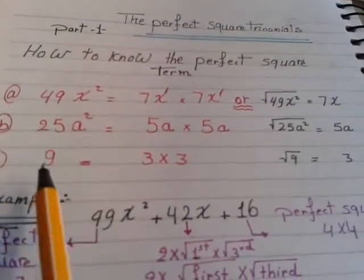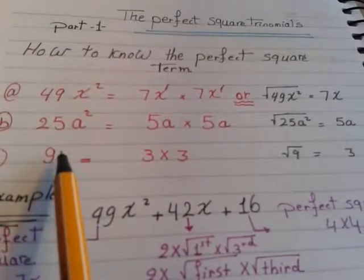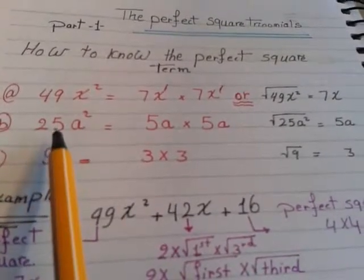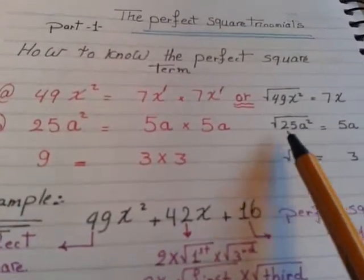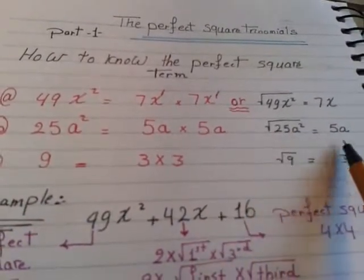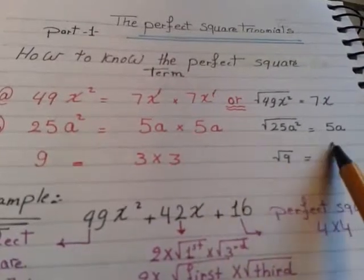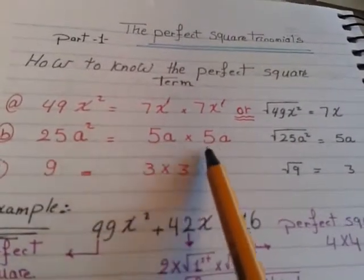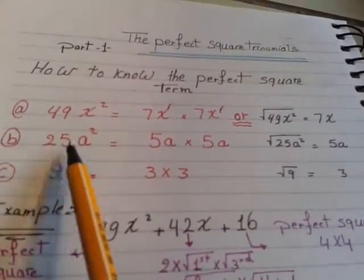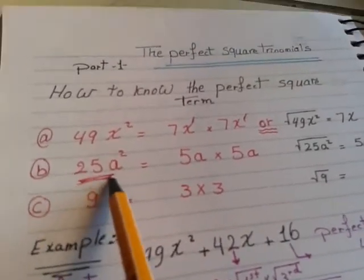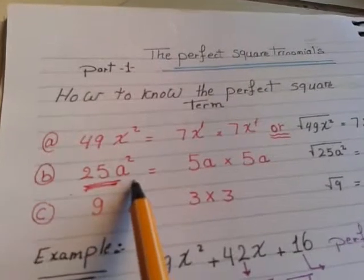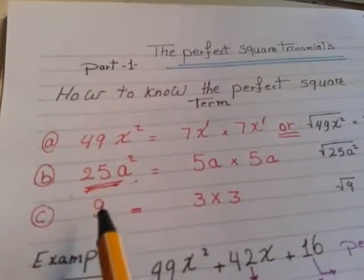Another term. 25a². 25a power 2. I have root for this value because 25 below the root is 25a² equals 5a. From where do we get this? From 5a times 5a equals 25a². So this term is called perfect square.